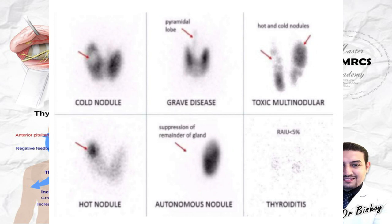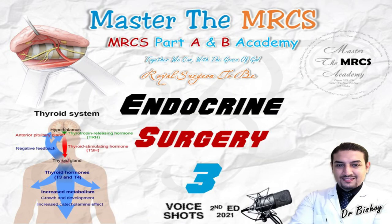A hot solitary nodule is a toxic adenoma — a good thing. Cancer is cold; it's very rare to be hot or toxic. So if an old lady comes with thyroid toxic causes or a toxic nodule, you know she will not die from thyroid cancer because she is toxic and hot. No one dies from thyroid toxic causes if managed well, but a neglected thyroid cancer can cause death.